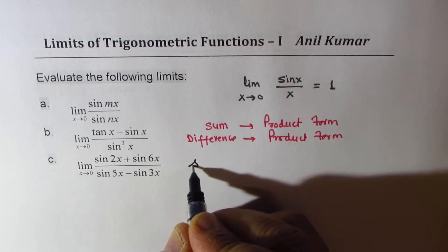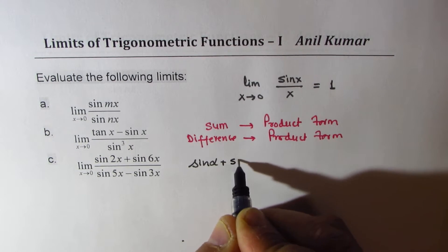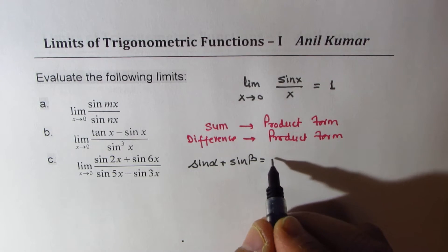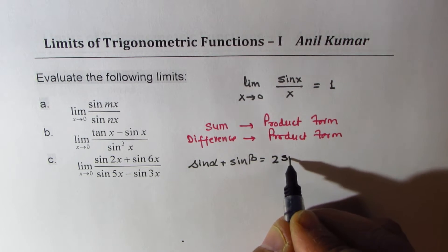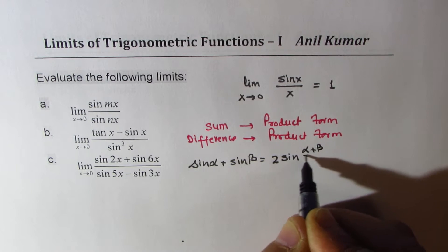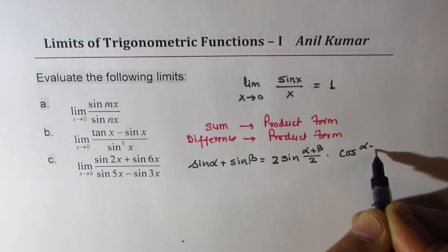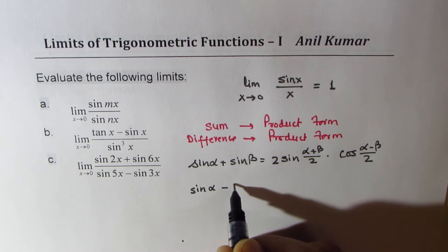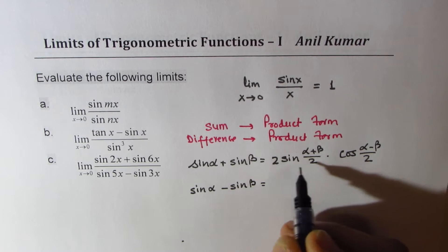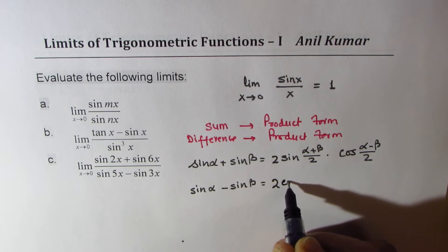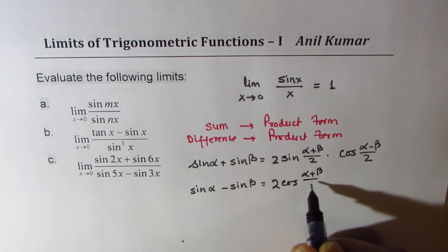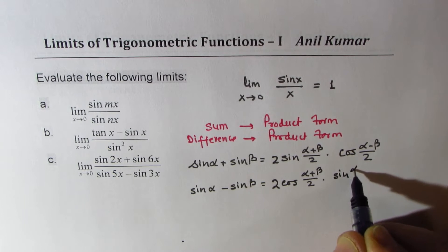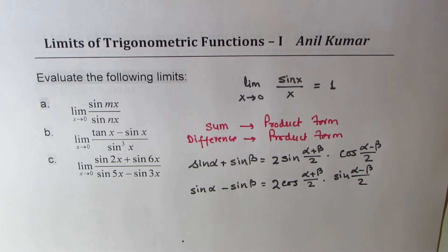If it is sin(α) plus sin(β), you can write this as 2·sin((α+β)/2)·cos((α−β)/2). If it is sin(α) minus sin(β), the formula changes slightly: it becomes 2·cos((α+β)/2)·sin((α−β)/2). These formulas will help you find solutions for these limit questions.